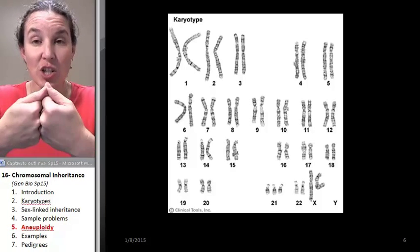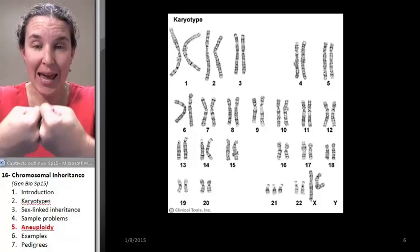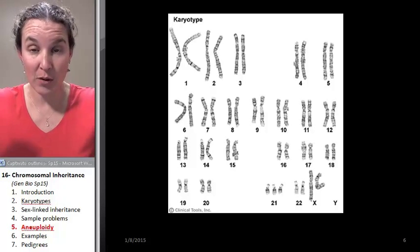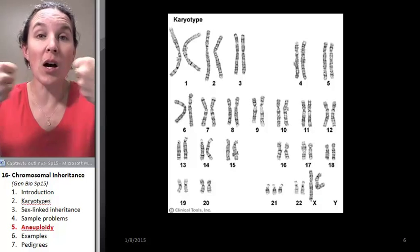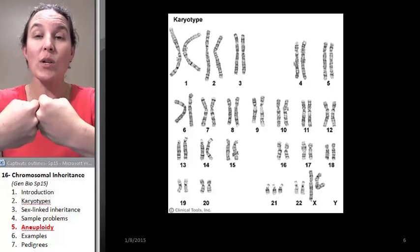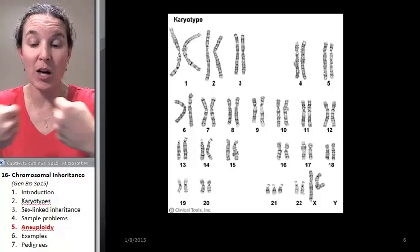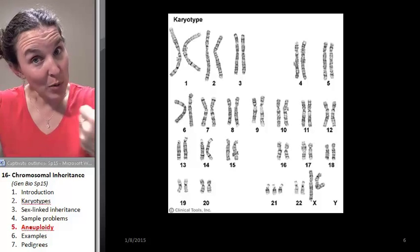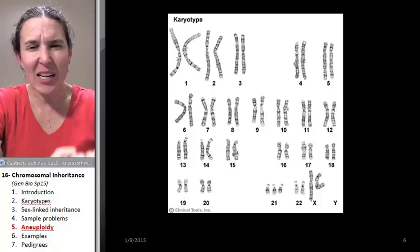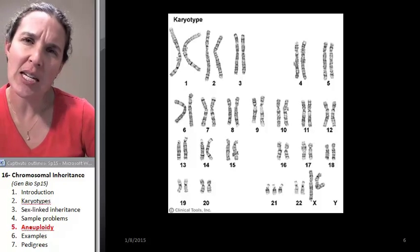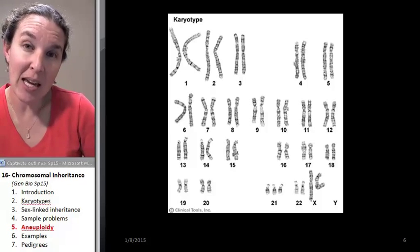Nondisjunction happens during anaphase when chromosomes are being pulled apart. Whether homologues are being pulled apart or sister chromatids are being pulled apart, if they don't get pulled apart properly, you're going to end up with a wonky number of chromosomes in your gametes.